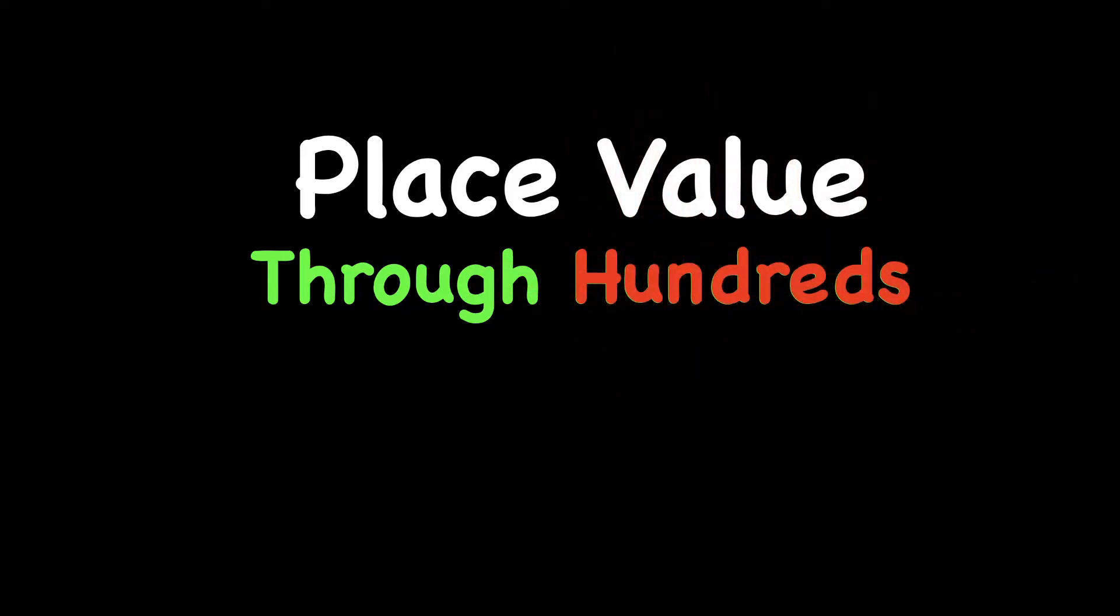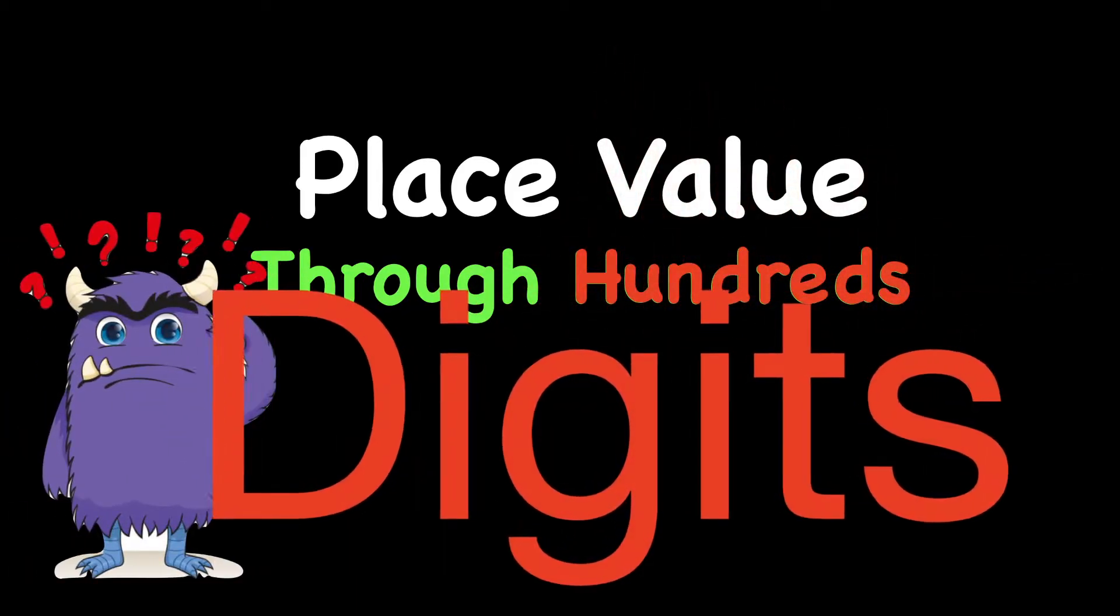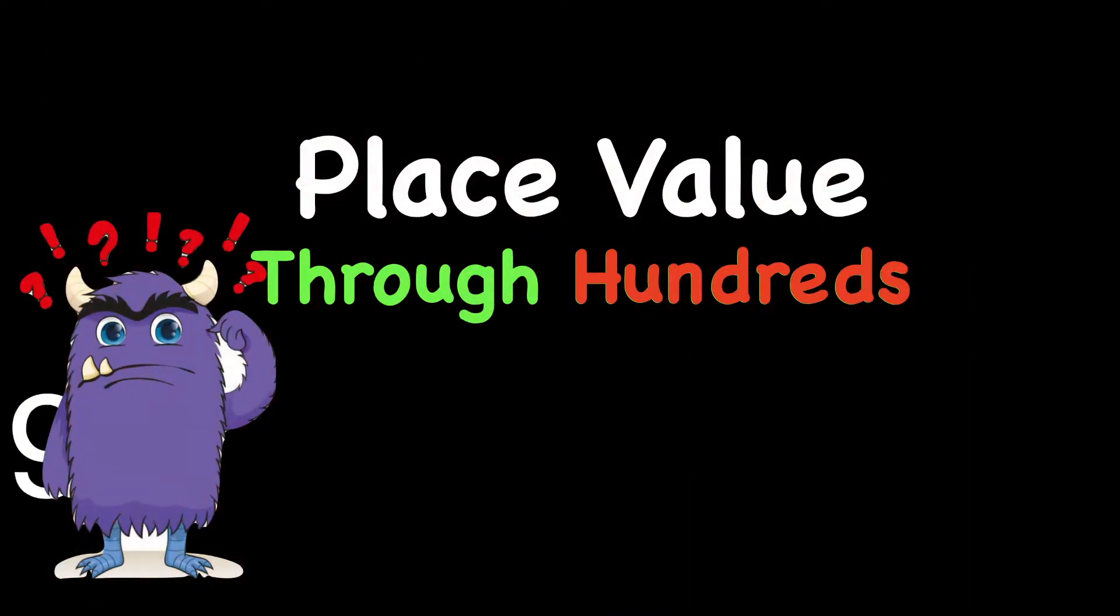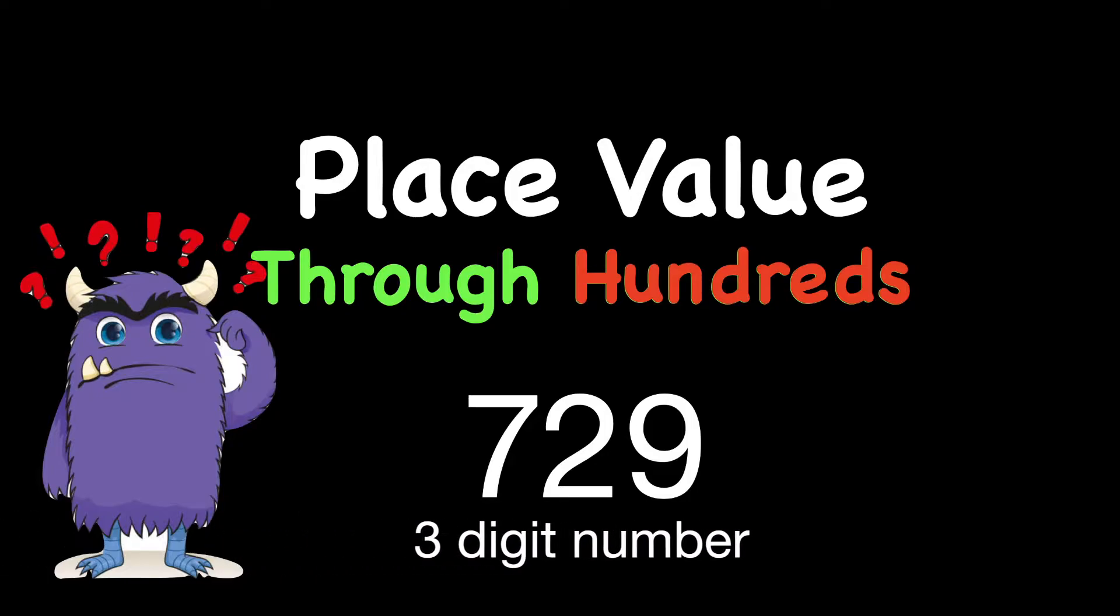So what is place value? Well, let's start with talking about a word called digits. For example, 729 is called a three-digit number. Nine's a digit, two's a digit, and seven is a digit.